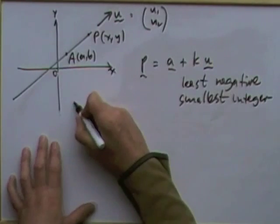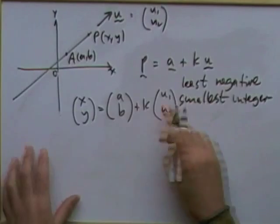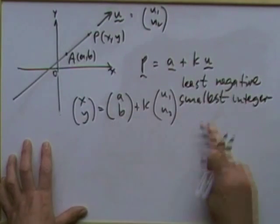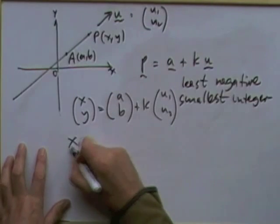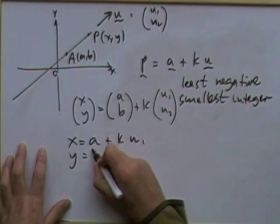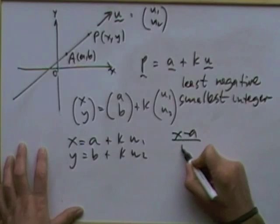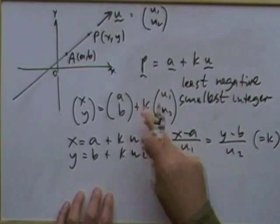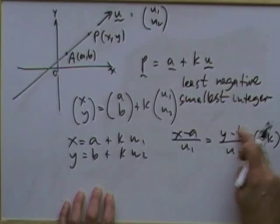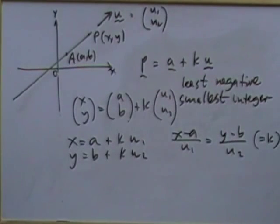Once you have the vector equation — (x, y) equals a starting point plus k times the direction vector — you can either keep it in vector form, split into the parametric forms x equals a plus ku1 and y equals b plus ku2, or divide them out to get the symmetric form (x minus a)/u1 equals (y minus b)/u2 equals k. All three forms are equivalent and readily identifiable.